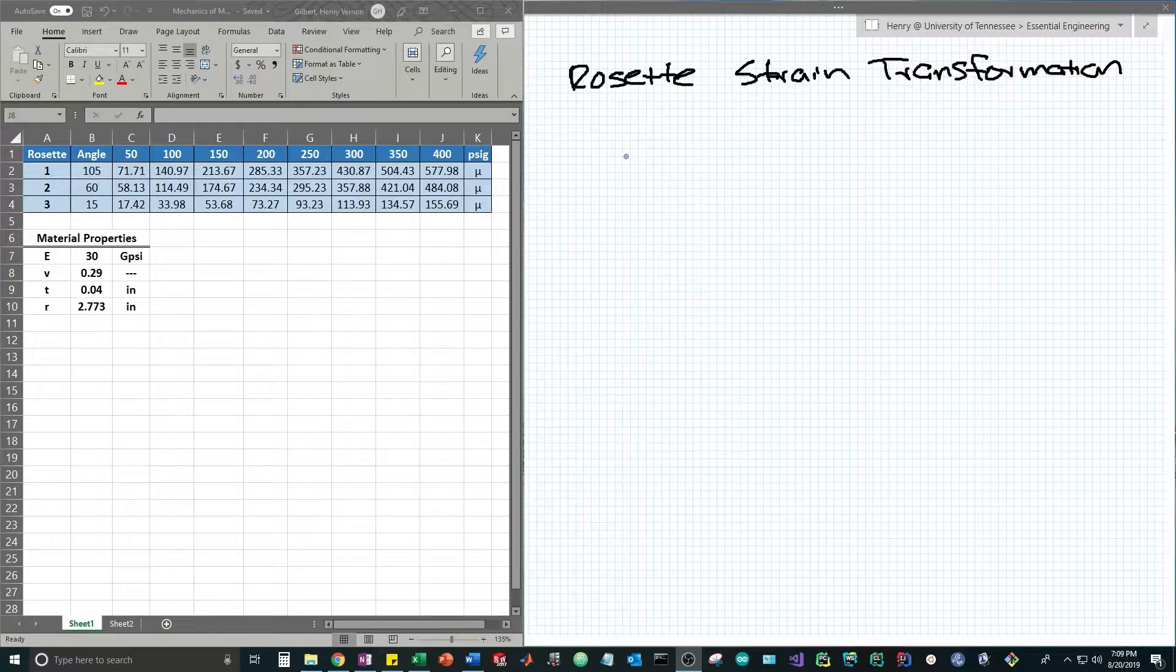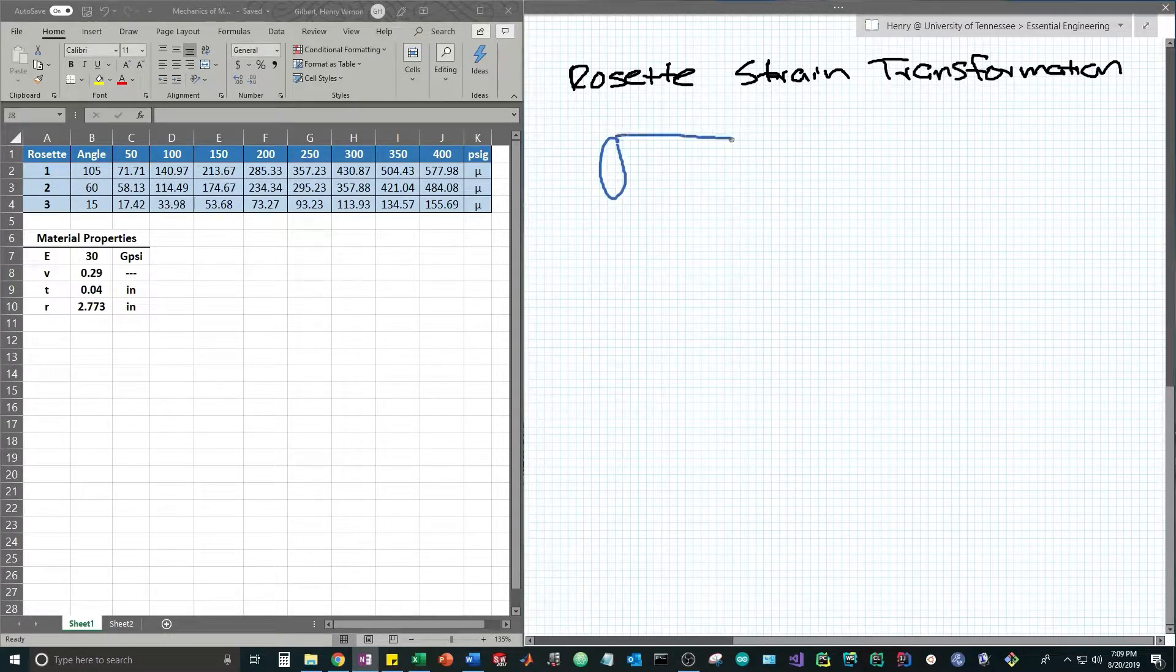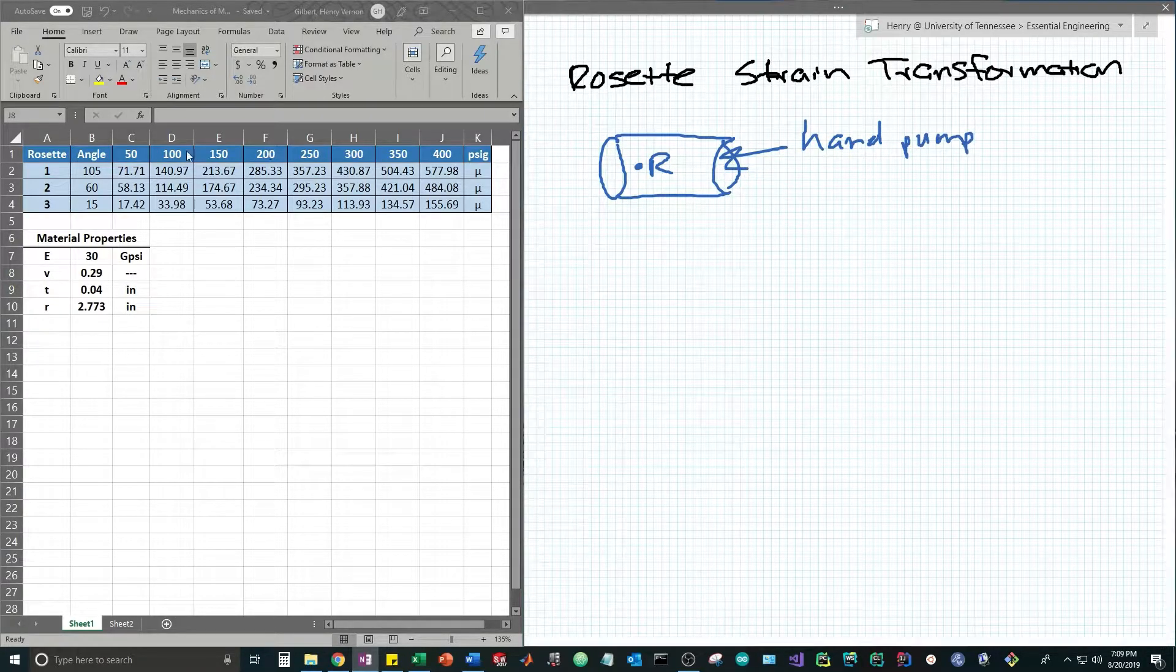Now this problem involves a cylindrical pressure vessel with a strain rosette placed around the center. We're applying pressure to the inside with a hand pump at increments from 50 psi all the way up to 400.